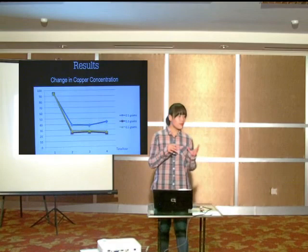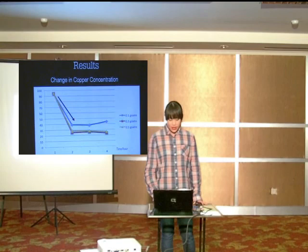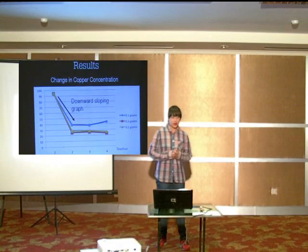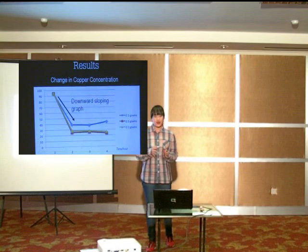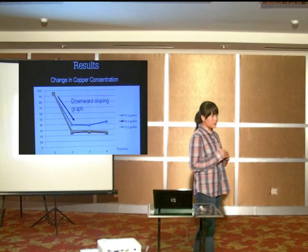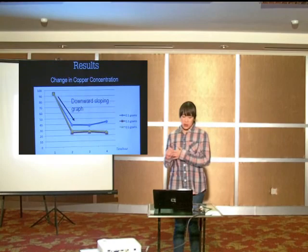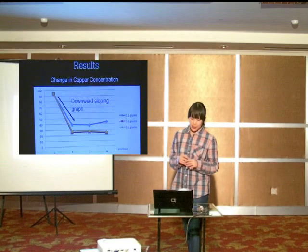From my analysis, I obtained the following results. As you can see, it is a downward sloping, decreasing graph. There are three graphs: the blue graph represents 0.1 grams, the red graph represents 0.3 grams, and the green graph represents 0.5 grams. Looking at the blue graph, in the first hour alone it decreased by over 60% from its initial concentration of 94 ppm.